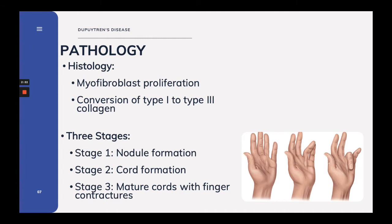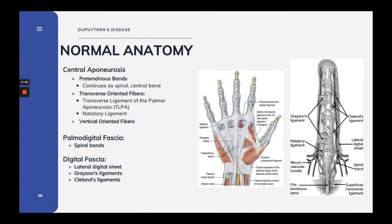Stage 1, the early phase, consists of skin changes including the formation of skin pits and nodule formation. Stage 2, the intermediate phase, consists of the development of cords. In stage 3, the late phase results in joint and tissue contractures.